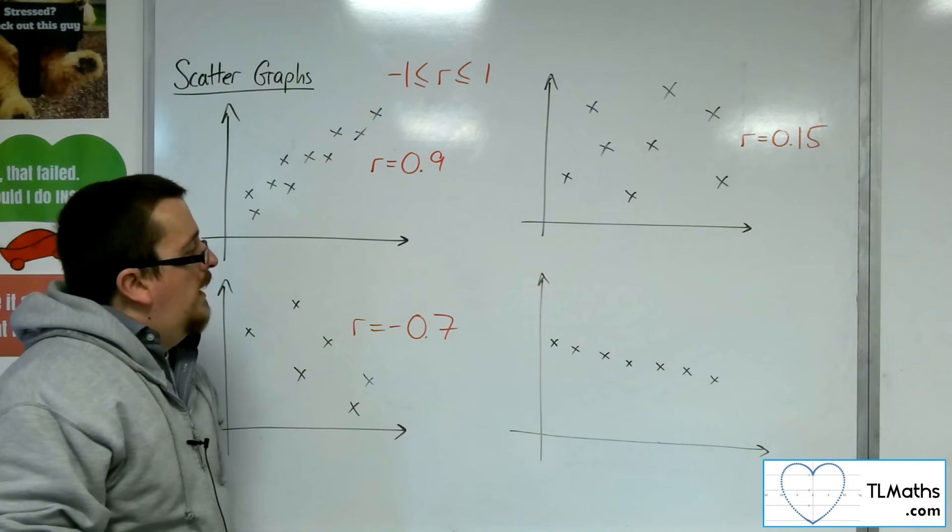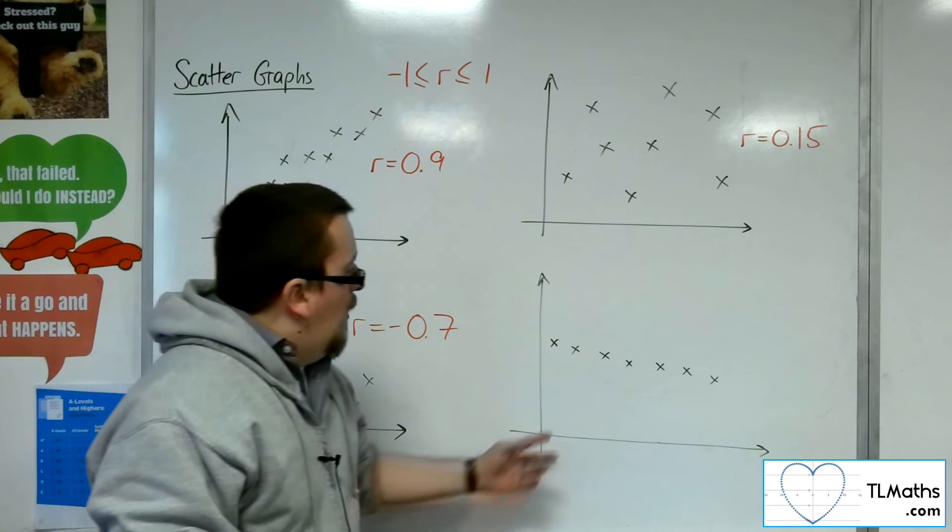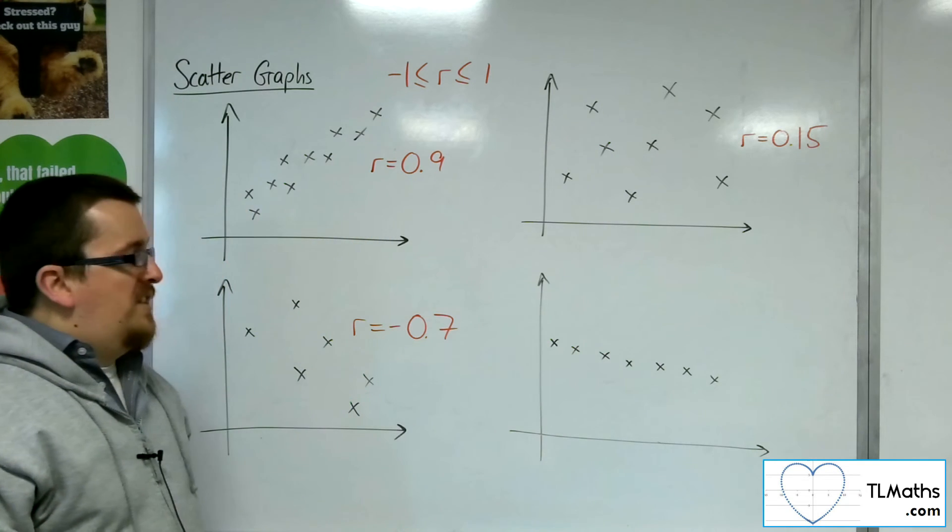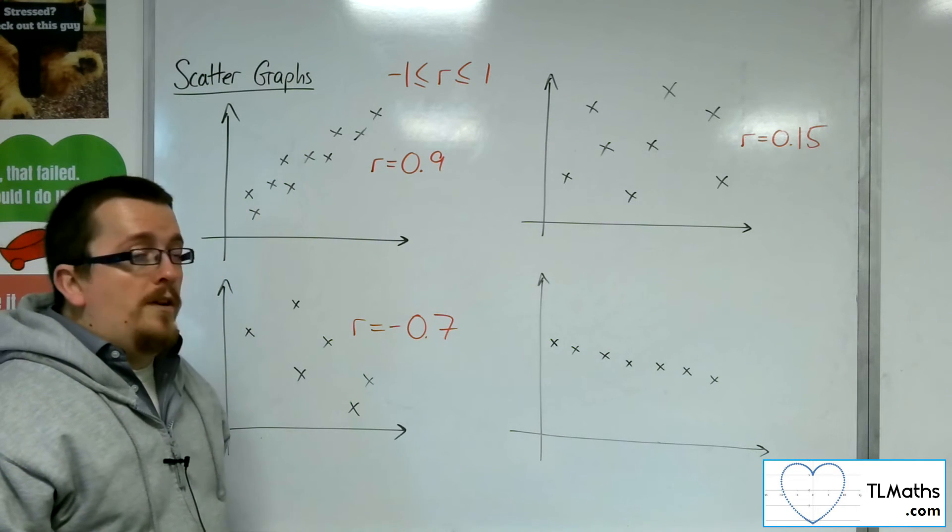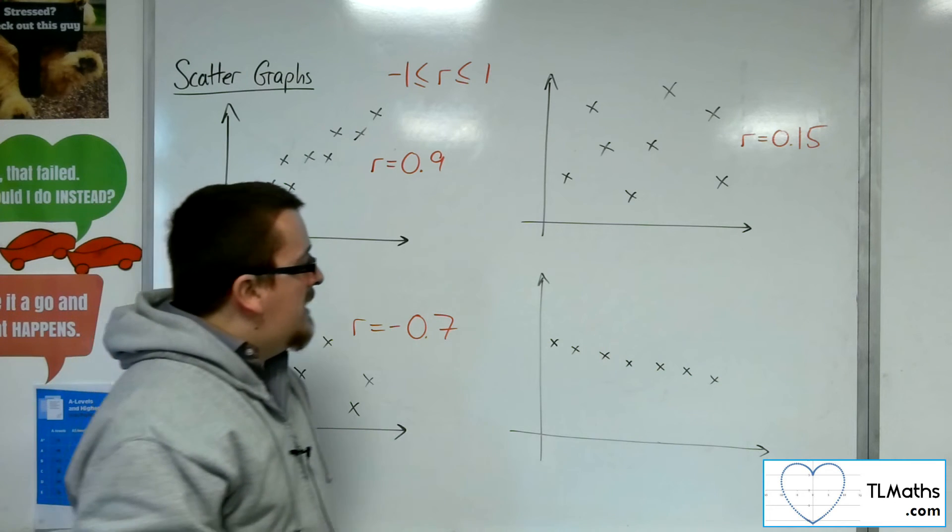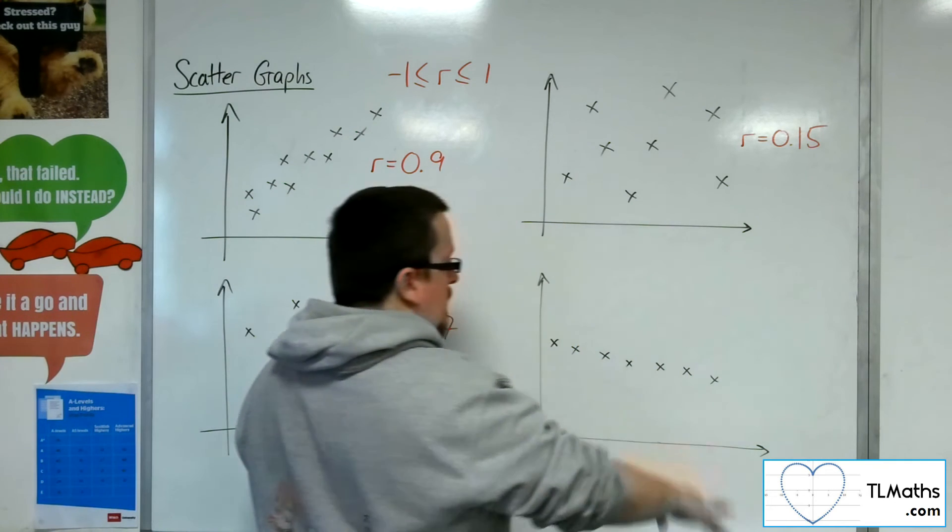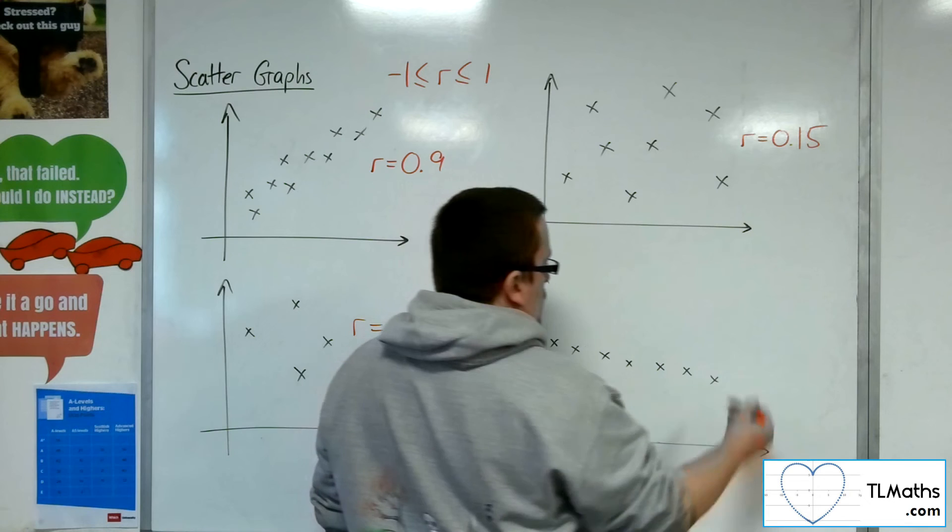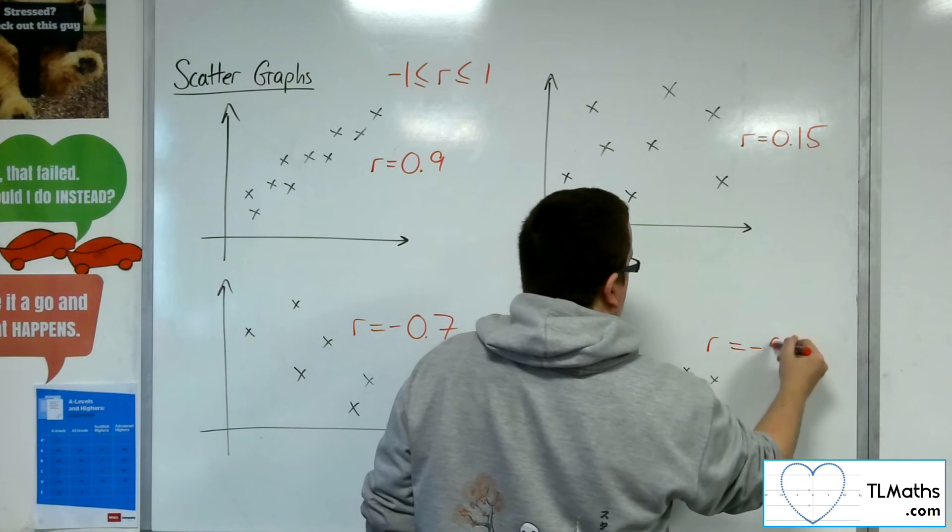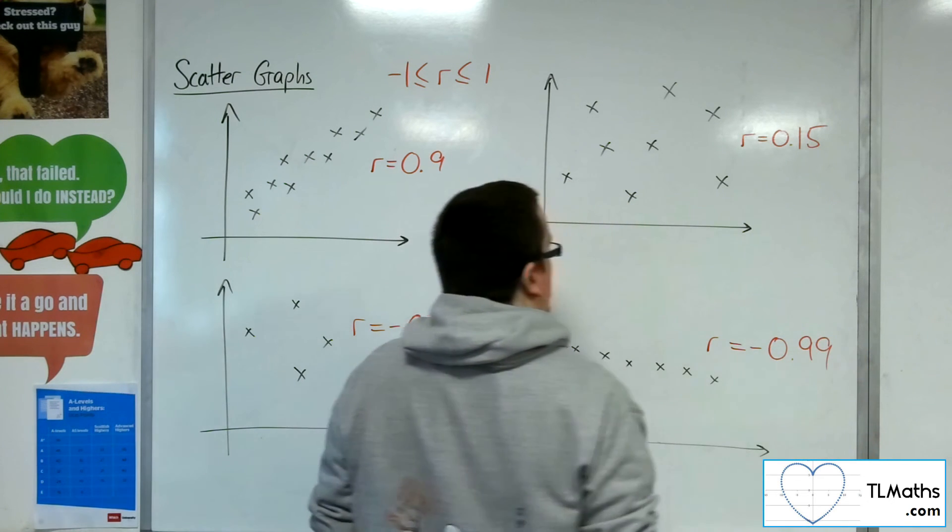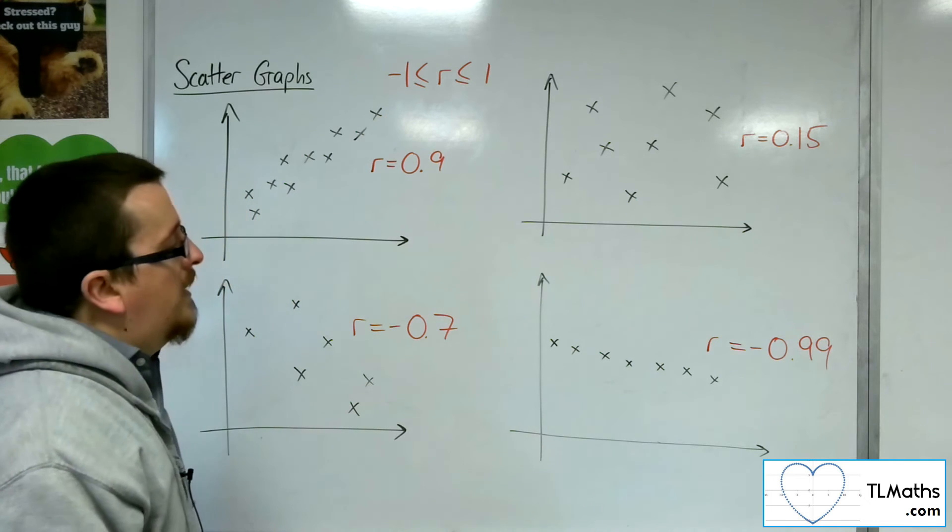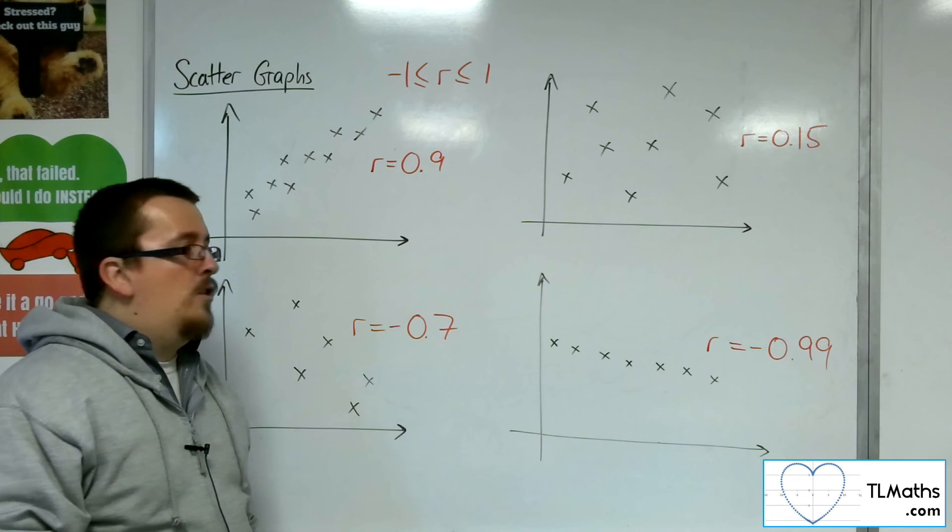This last one, it's definitely negative correlation. It looks quite strong as well. It's not perfect, it's not going in a perfect straight line. So I'd probably put that at minus 0.99. Very close to being perfect negative correlation, but not quite.